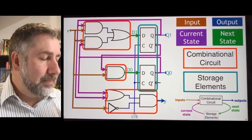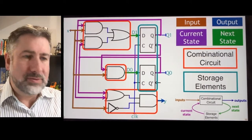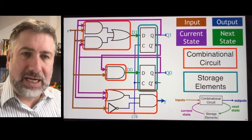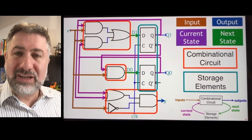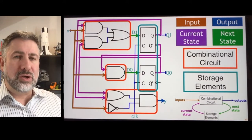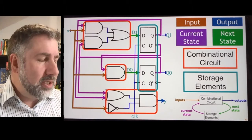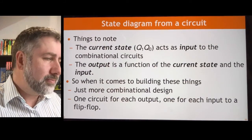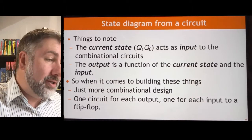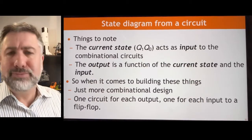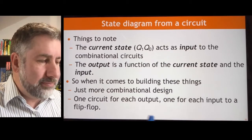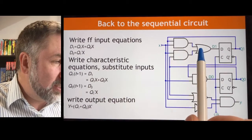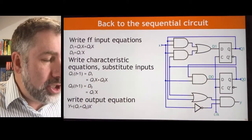So what does the state diagram look like? This is the end result that you will hand in when you finish one of these problems. Let's back up one step and discern what the state diagram would look like and what the combinational logic would be to create the tables used to design this machine. The current state acts as input to the combinational logic, and the output is a function of the current state and the input.